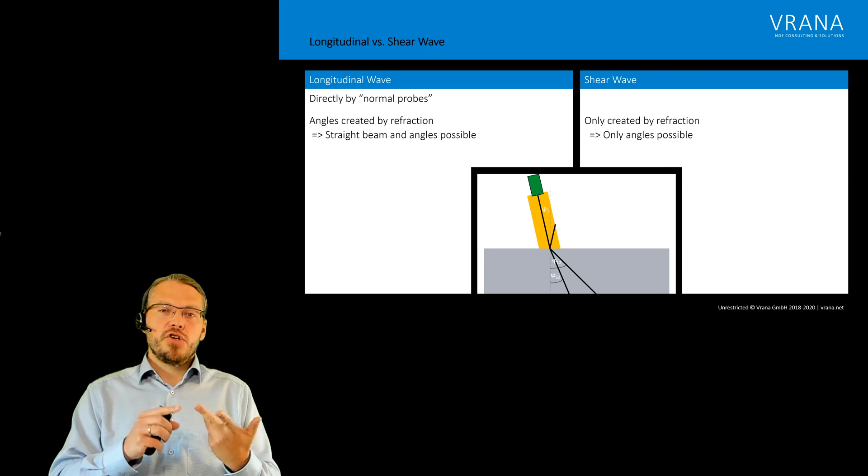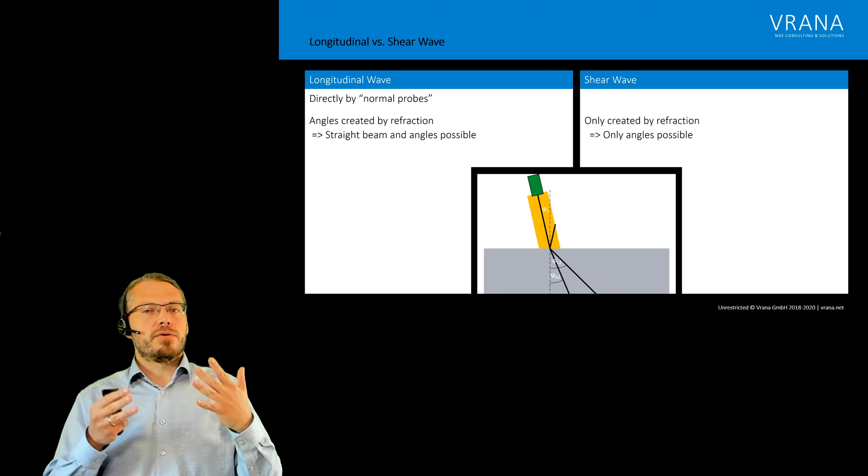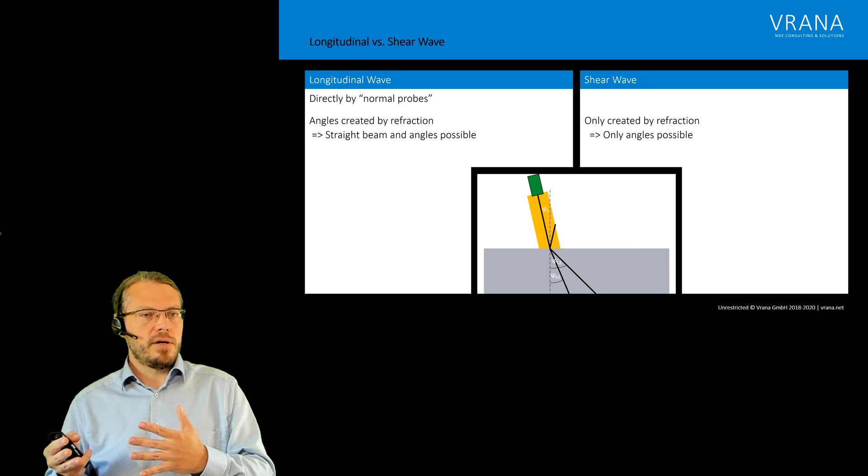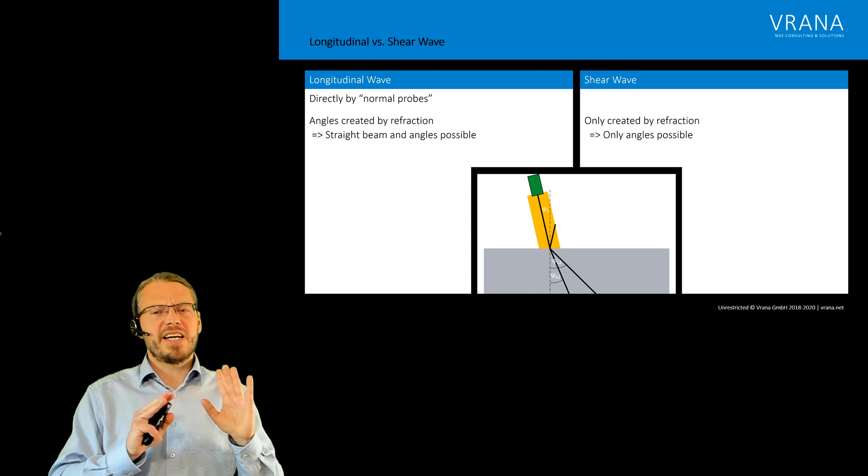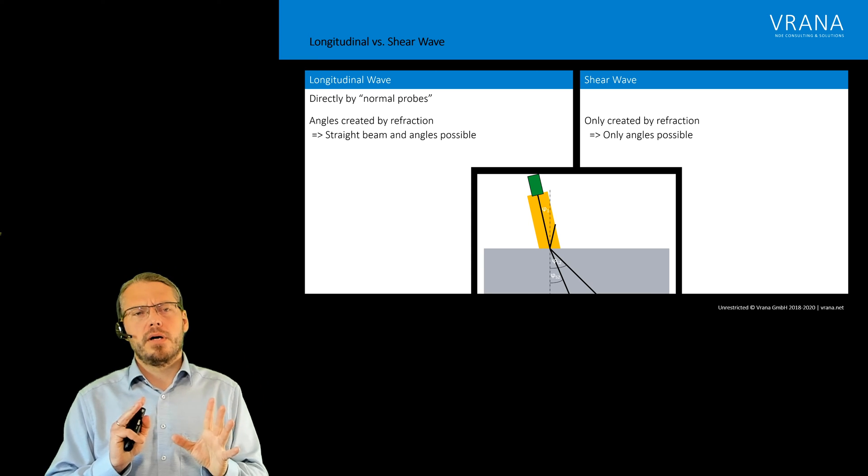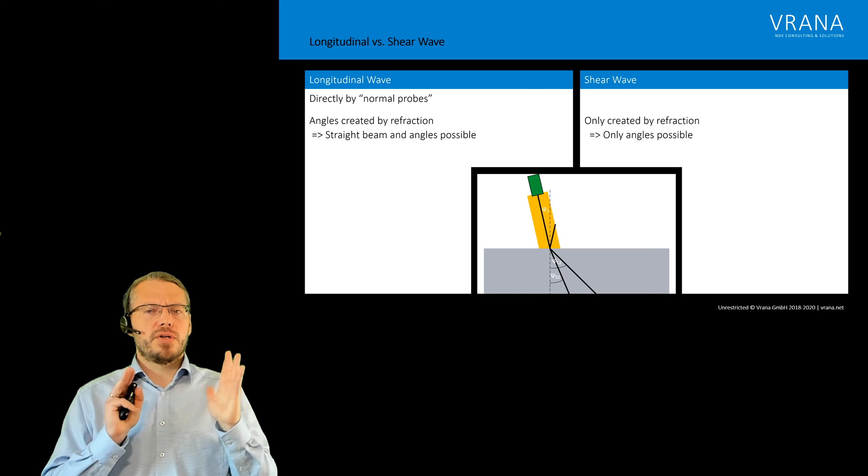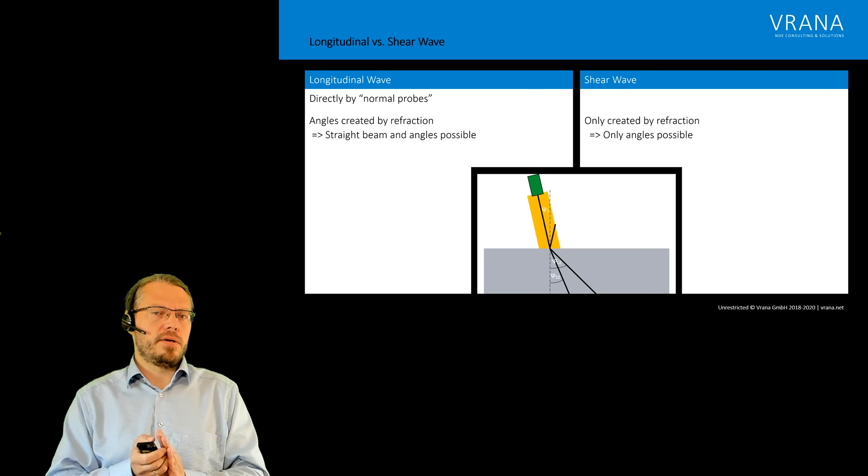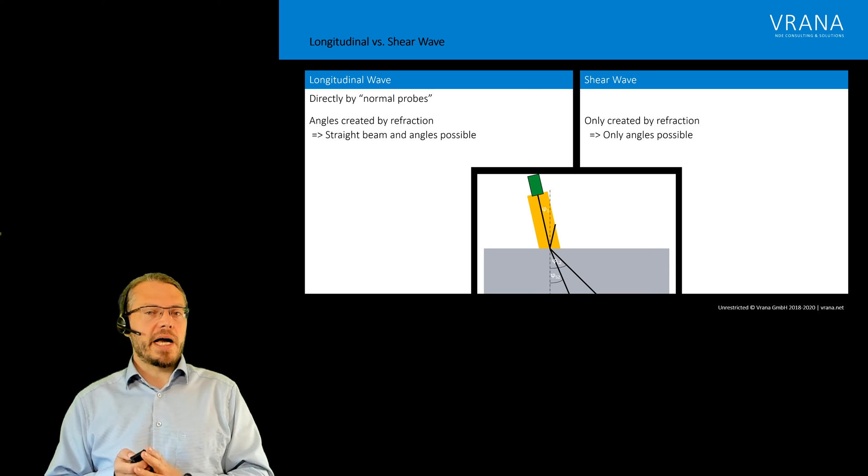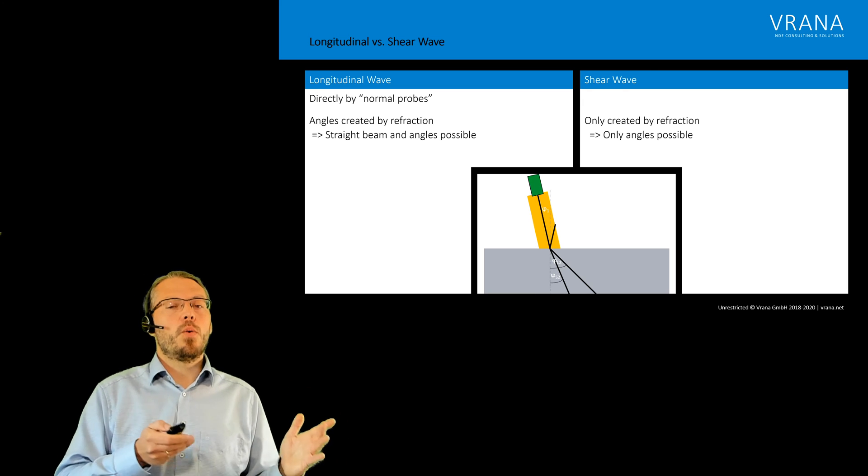Shear waves, we can only create due to refraction. We cannot produce them directly. Actually there are some specialized probes, but the normal ones you have to use a wedge. And you can only use it for angles. Now let's see which angles we get.